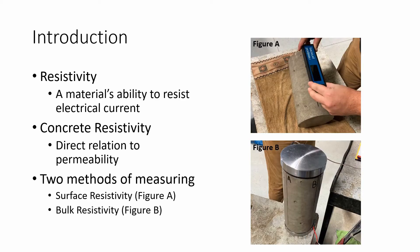Resistivity is a material property that measures a material's ability to resist electrical current. Resistivity measurements can be made on concrete specimens. What resistivity measurements will tell us is how permeable concrete will be. This is an important parameter because it can tell us how easy it is for outside chemicals to infiltrate the concrete. A lot of outside chemicals can cause durability issues in concrete, but if it has a low permeability, these chemicals won't cause too much harm.